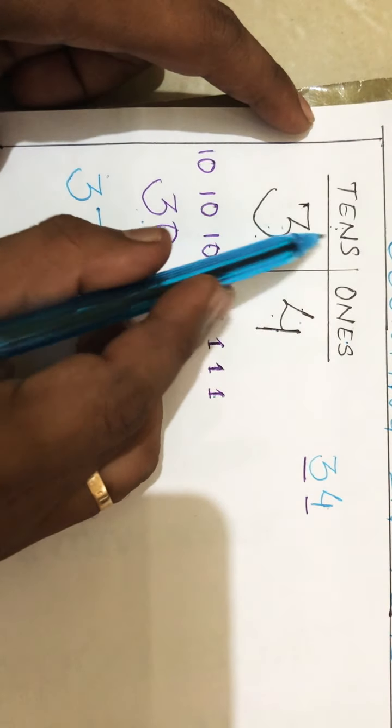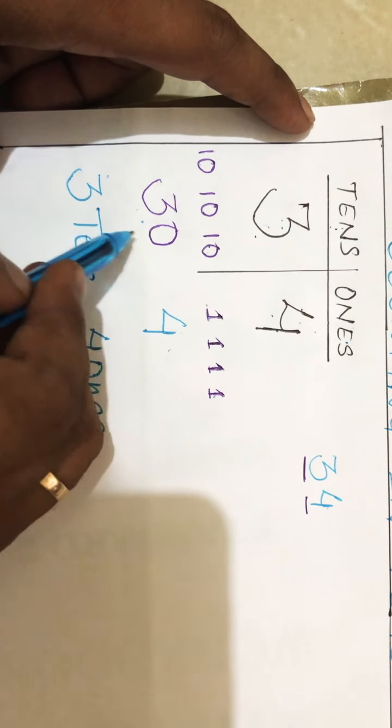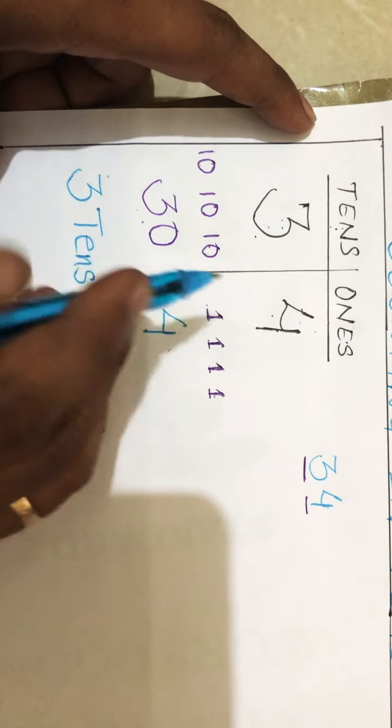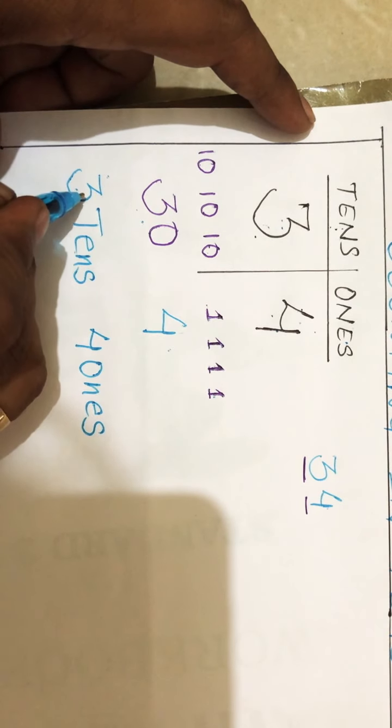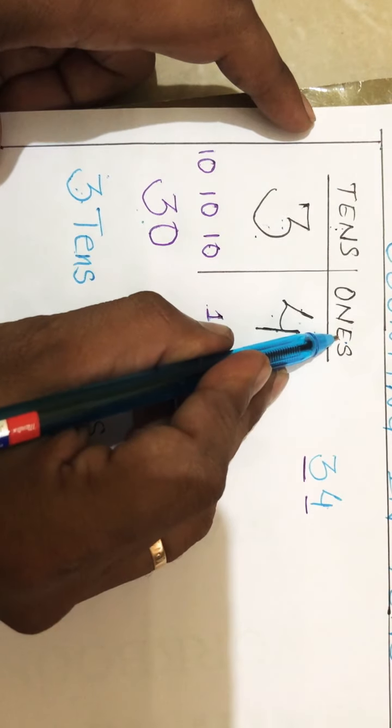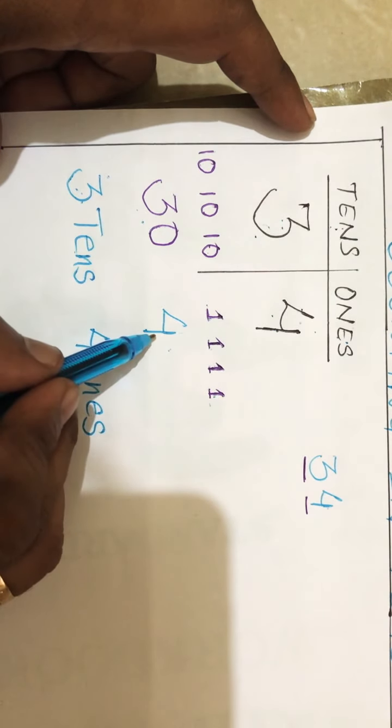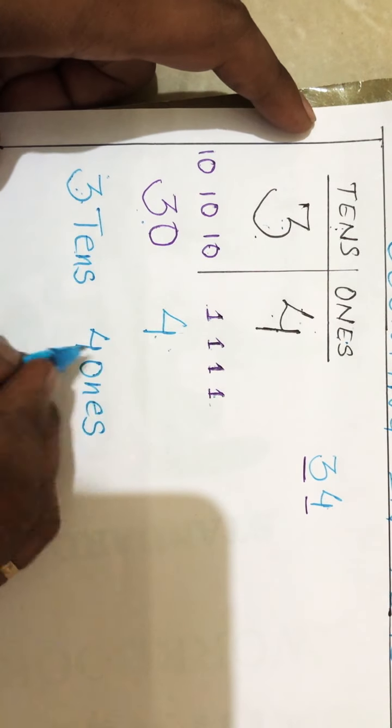It is at ones place, so we can write like this also: four ones. So place value can be written as three tens, and four is at ones place. The place value, either you write four as it is, or else you can write four ones.